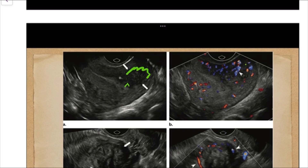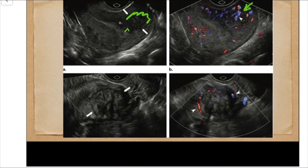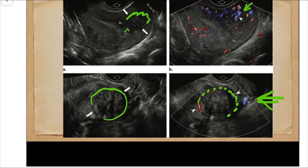Here also the endomyometrial junctional zone is very indistinct, the myometrium is heterogeneous and bulky. On color Doppler, vascularity is increased with tortuous penetrating vessels going through the lesion. In contrast, in another case we can see a well-circumscribed heterogeneous lesion. On color Doppler, it shows circumferential or peripheral vascularity — this is typical of a leiomyoma or fibroid. Fibroids have peripheral vascularity, while adenomyosis shows penetrating vessels through the lesion. That's it for today; I hope I've made this topic easy. You can ask any doubts in the comment section.